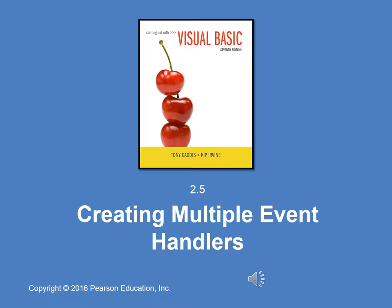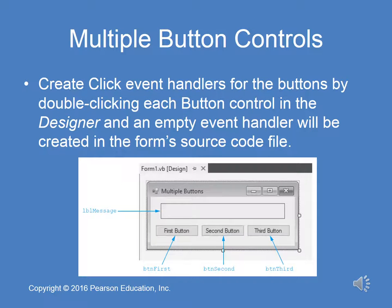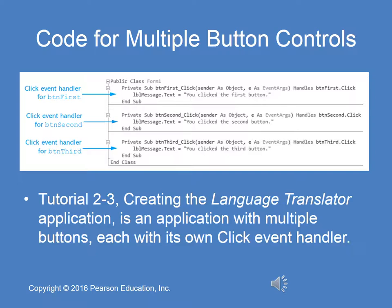Next, we'll cover section 2.5 — creating multiple event handlers. This is very simple. In the example, we have three buttons created in design view. We simply create click handlers by double-clicking each button in design view, and an empty template event handler is created in the form's source code file. Now would be a good time to pause and turn to page 77 in your textbook to complete Tutorial 2-3, the language translator application.